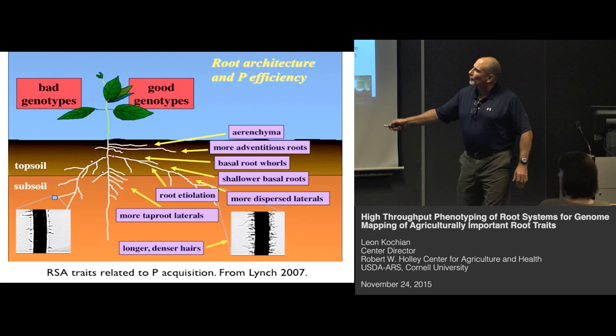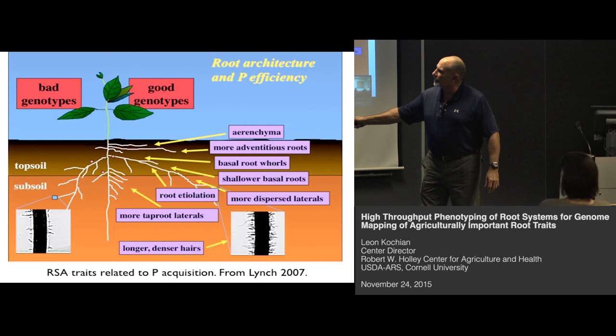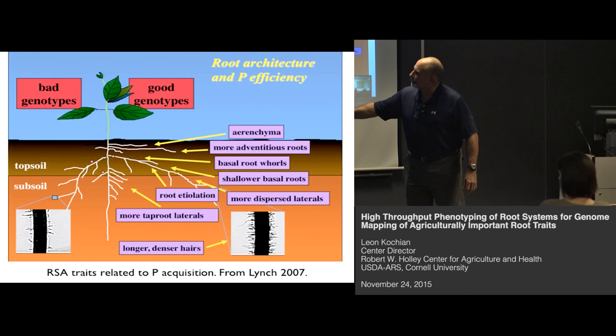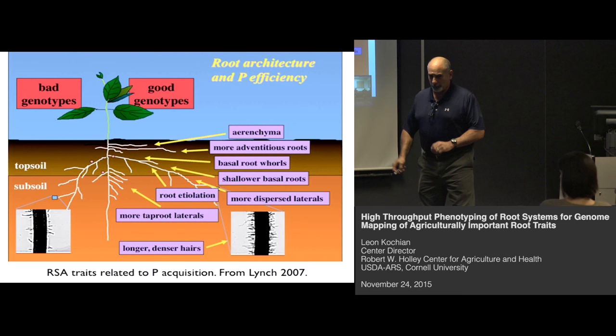There are all sorts of traits that can be involved in phosphorus efficiency. Phosphate is one of the most immobile nutrients in the soil — it moves very slowly and tends to bind to aluminum and iron oxides on clay mineral surfaces, particularly in acid soils. Work from Jonathan Lynch's lab at Penn State and Hong Liao's lab at South China Agricultural University found that genotypes putting more lateral roots out ageotropically — going out instead of down — put roots where the phosphorus is, and this is an important part of phosphorus efficiency.